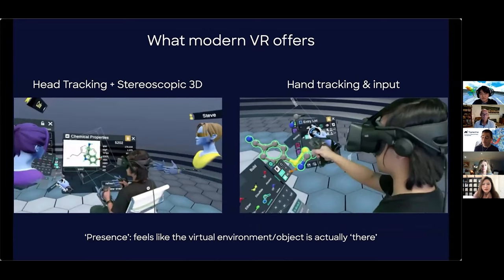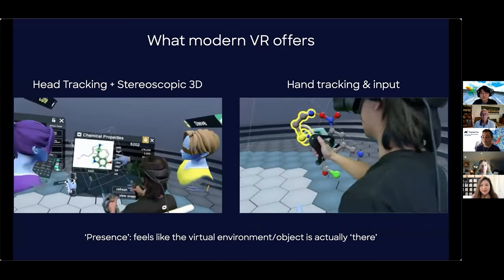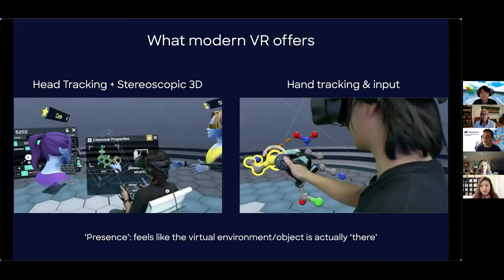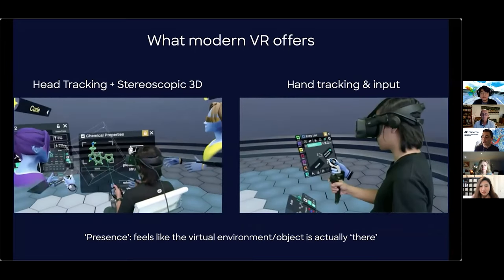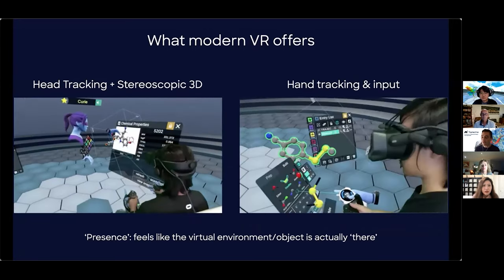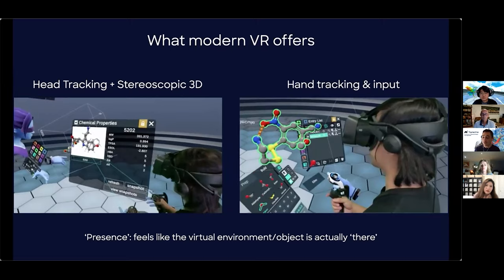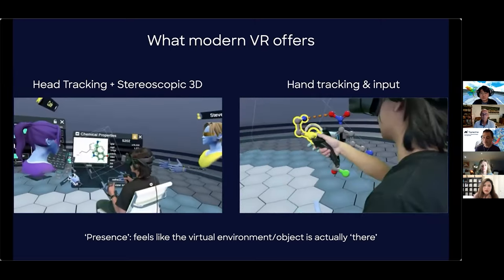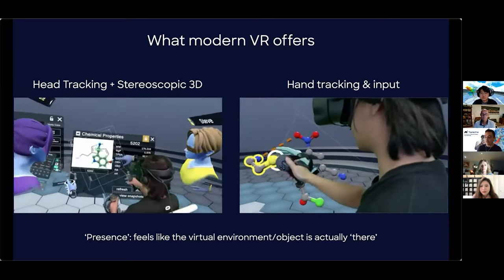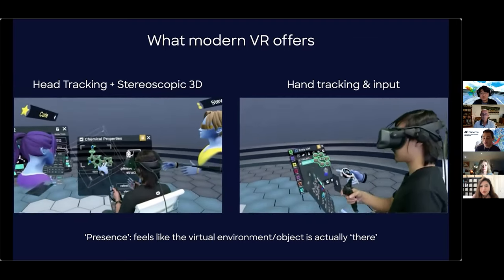Perhaps the most important thing — and what I like the most — is the fact that you get your hands in the environment, such that you can make high-fidelity adjustments in the environment itself. And overall, what this amounts to is what we like to call presence — the feeling that you are actually in that virtual environment or that the actual virtual object is there.